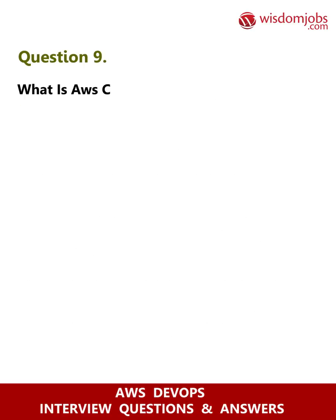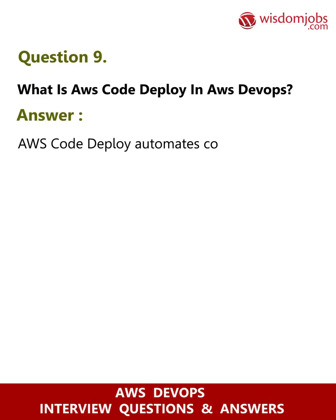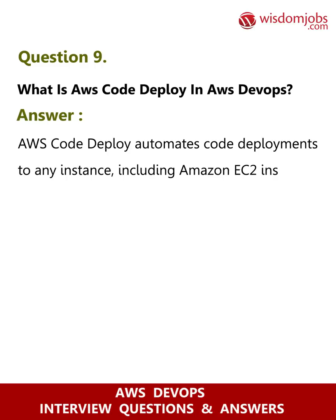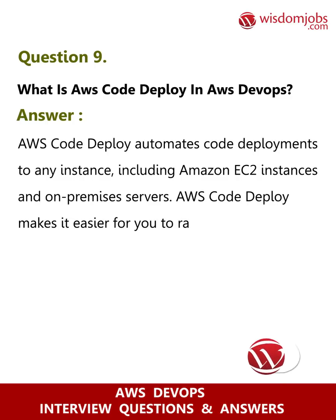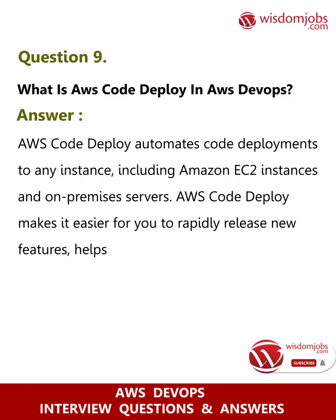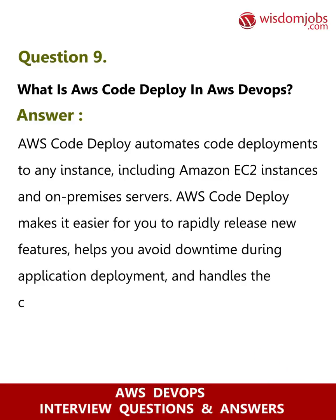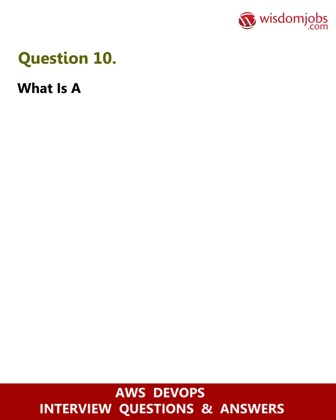Question 9: What is AWS CodeDeploy in AWS DevOps? Answer: AWS CodeDeploy automates code deployment to any instance, including Amazon EC2 instances and on-premises servers. AWS CodeDeploy makes it easier for you to rapidly release new features, helps you avoid downtime during application deployment, and handles the complexity of updating your applications.